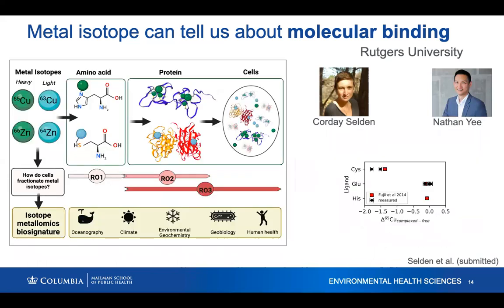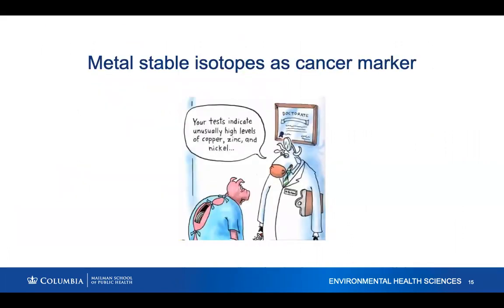Based on that, we can hypothesize: knowing which proteins bind heavy versus light isotopes has applications not only in the biomedical field, but also in geobiology — understanding how metals bind in bacteria and in the development of early life on Earth. There are huge implications for understanding how metals bind to amino acids and proteins.